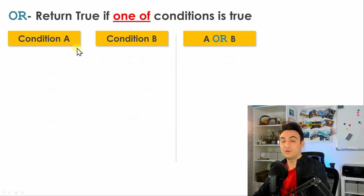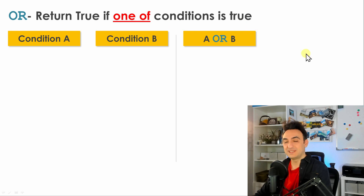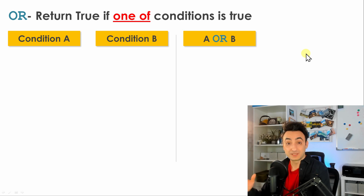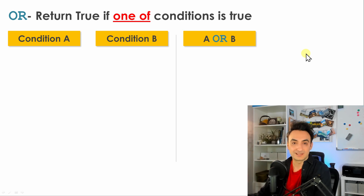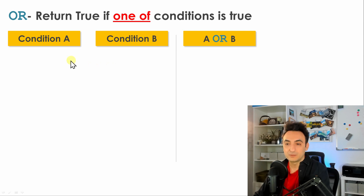Now the OR operator — it returns true if at least one of the conditions is true. The OR operator is happy if even one condition is true to give you true; otherwise it gives you false. Let's check the same example with condition A and condition B but now applying OR.